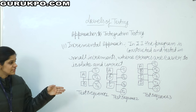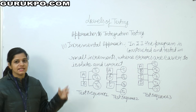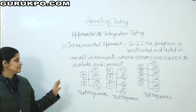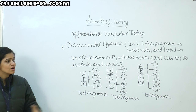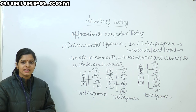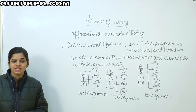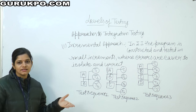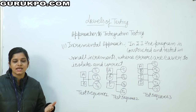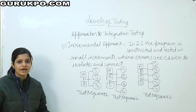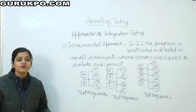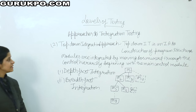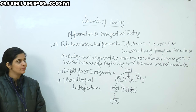Modules E, F, D and so on keep getting added. What happens is that whatever errors exist get easily isolated and corrected. We keep adding one thing at a time and testing it, so all errors properly get eliminated. Second is the top-down integration approach.